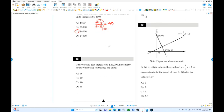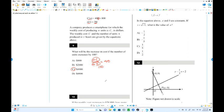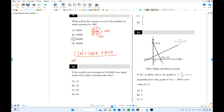Number 10. If the weekly cost increases $20,000, how many hours will it take to produce the unit? I'm going to use c in terms of t: 40 times n, where n is 30t, so 40 times 30 is 1200t plus 800. Now the cost is a function of time. This one is $20,000, which equals 1200t plus 800. Subtract 800: 19,200 equals 1200t. Divide by 1200: 192 divided by 12 is 16. So 16 is the answer.